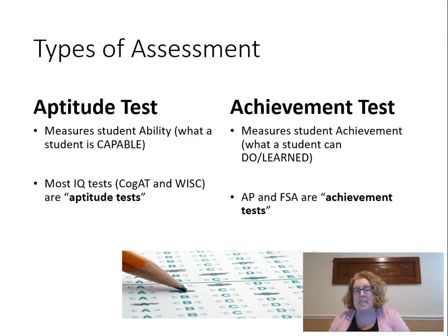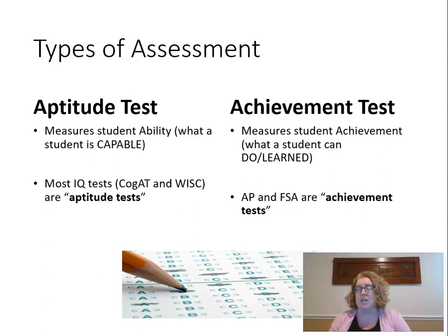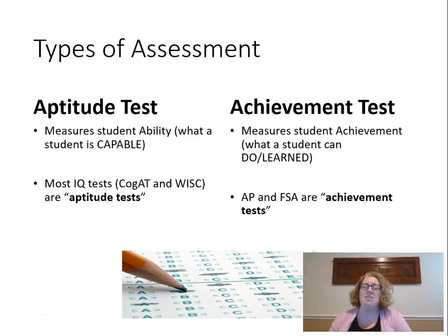If you hear cognitive abilities or IQ, that's a signal for aptitude. Achievement tests are what students have learned — things like AP tests, the FSA, end-of-course EOCs. Most of what we do in school are achievement tests. We're mostly concerned with what students have learned or can do. We usually only measure aptitude when diagnosing a learning disability or identifying students for a gifted program.